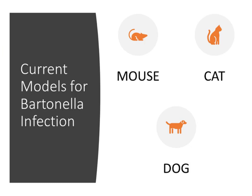Currently there are three main models for Bartonella infection: the mouse, the cat, and the dog. Studies in mice have given a variety of different results, making it difficult to determine the best model. Cats are a good model for Bartonella bacteremia because they can remain bacteremic for long periods, and it is a myth that cats don't develop disease from Bartonella — they certainly can. Dogs can develop persistent infection in their tissues, but their bacteremia is short-lived.